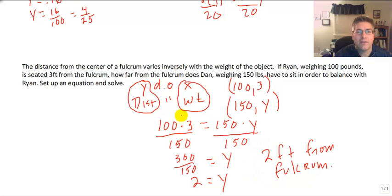So our constant of variation in this is 300. We know that x times y equals k. So 100 times 3 equals 300. So then 150 times y also has to equal 300.